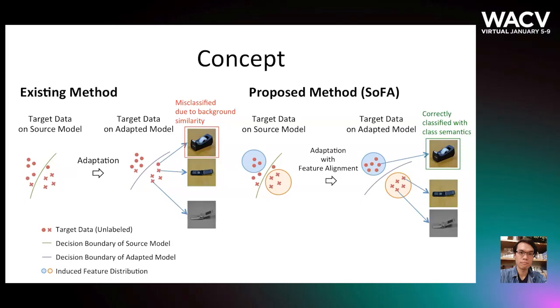To overcome this limitation, we propose a source data-free feature alignment method, named SOFA, to guide the latent feature in the adapted model. As shown on the right side of the figure, a reference feature distribution is induced from the predicted classes. The latent features of target data are then required to form the same number of clusters in order to be aligned with the reference feature distribution. In this manner, the adapted model is able to extract class semantic information more efficiently.